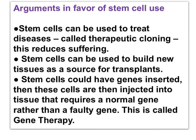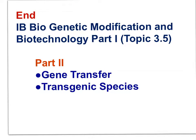Arguments in favor of stem cell use: stem cells can treat diseases — therapeutic cloning — reducing suffering. Stem cells can build new tissues as a source of transplants. Genes can be inserted into stem cells, which are then injected into the tissue requiring a normal gene rather than a faulty one — this is called gene therapy. That brings us to the end of IB Biogenetic Modification and Biotechnology Part 1. In Part 2, we will look at gene transfer and transgenic species.